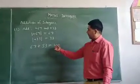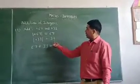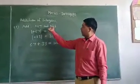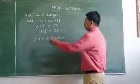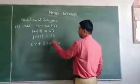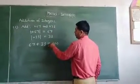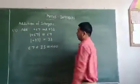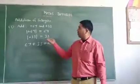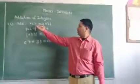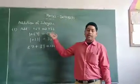We prefix the same sign of the integers — it is positive. Both are positive integers and the result is also positive. This is the result of addition of two like integers.